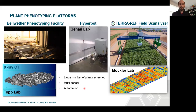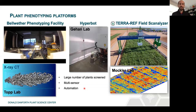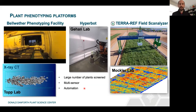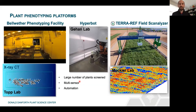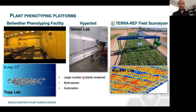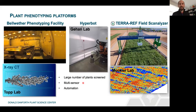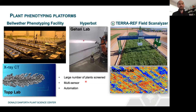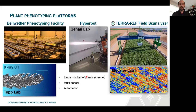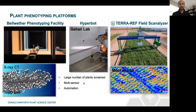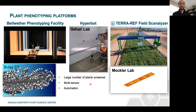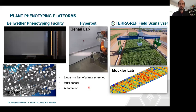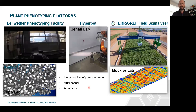The main thing with all these systems is they allow us to screen a relatively large number of plants, sometimes with different interesting modalities — RGB cameras, hyperspectral cameras, X-ray CT systems, and so on — that give us unique insight into plant phenotype.